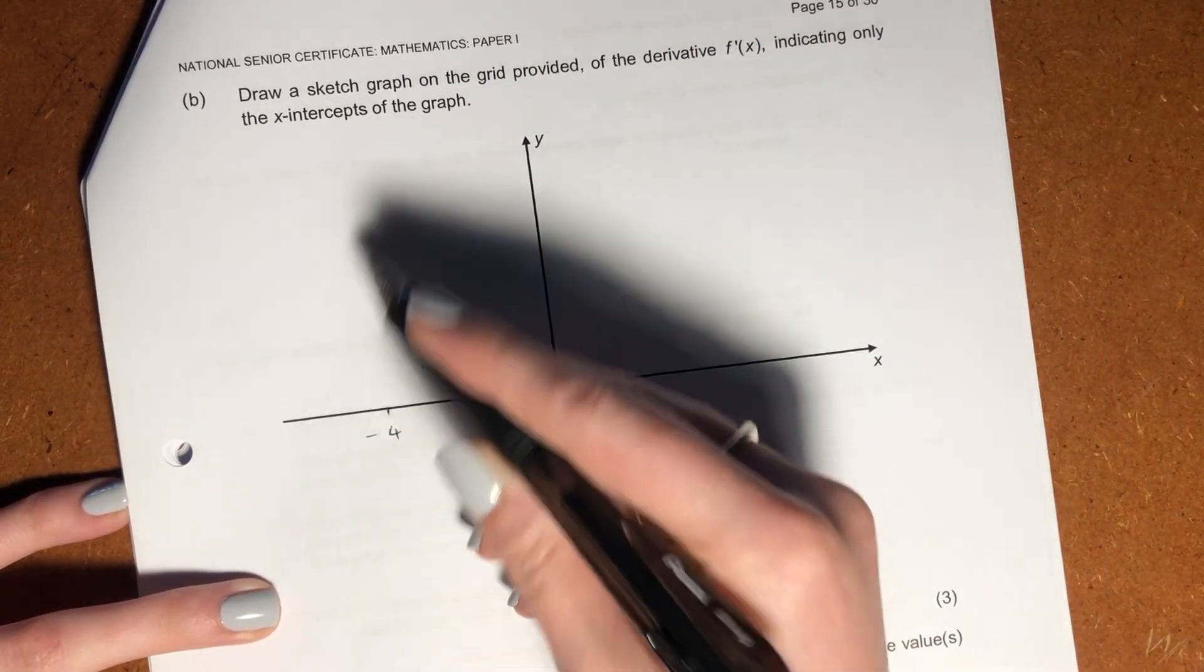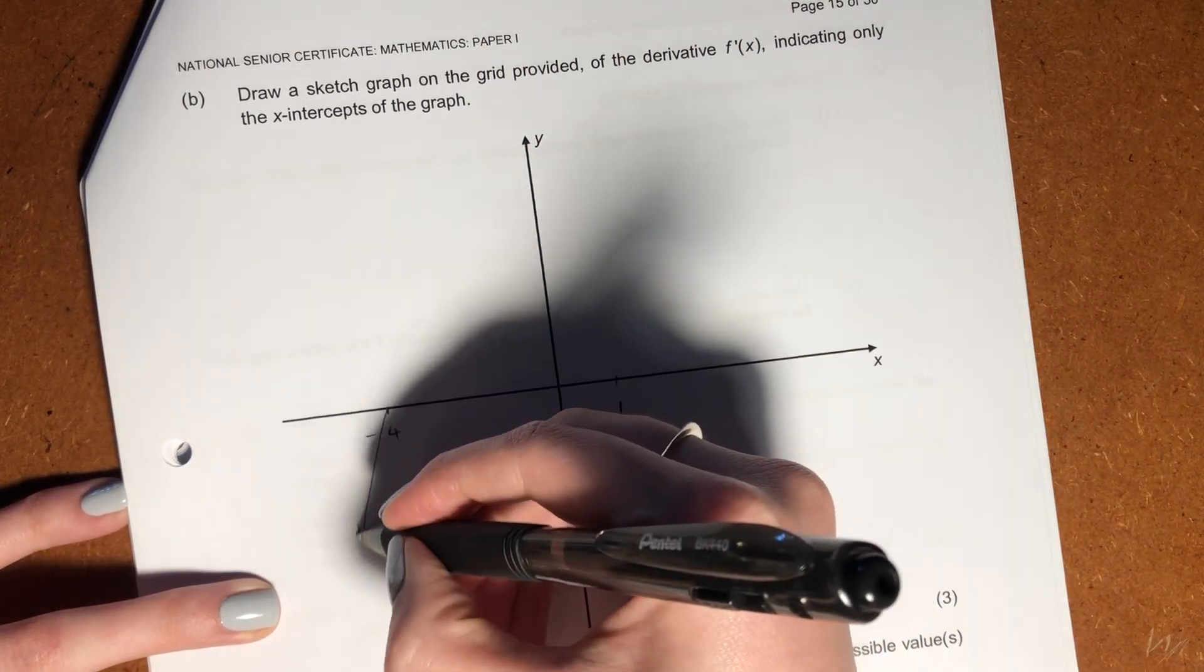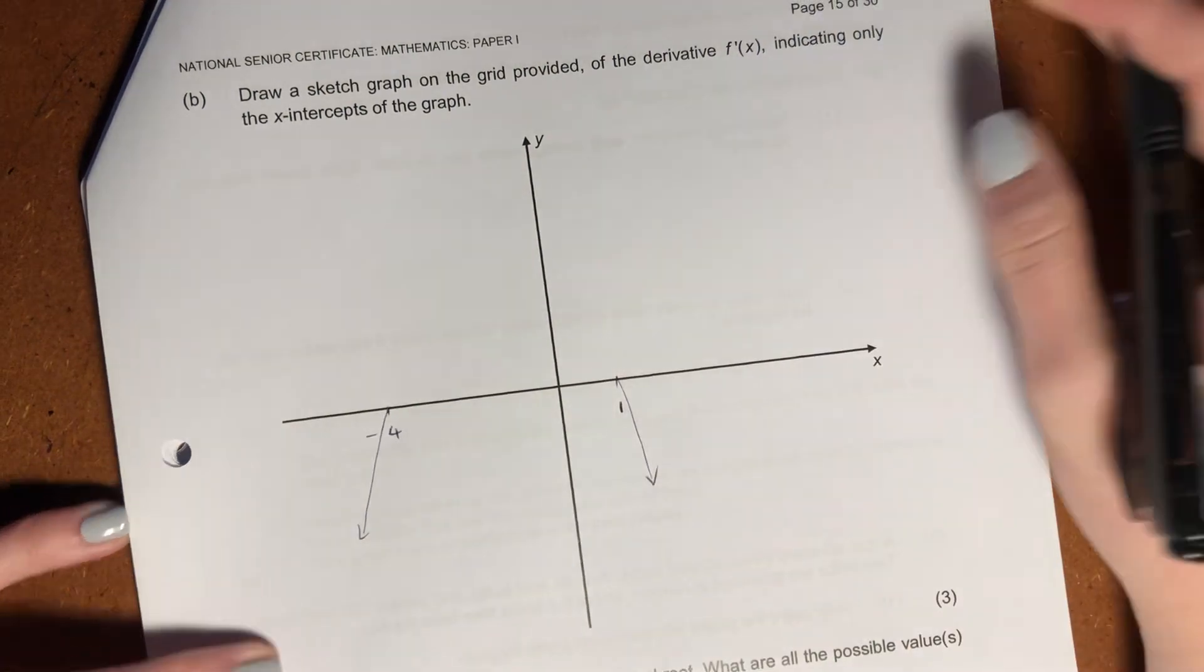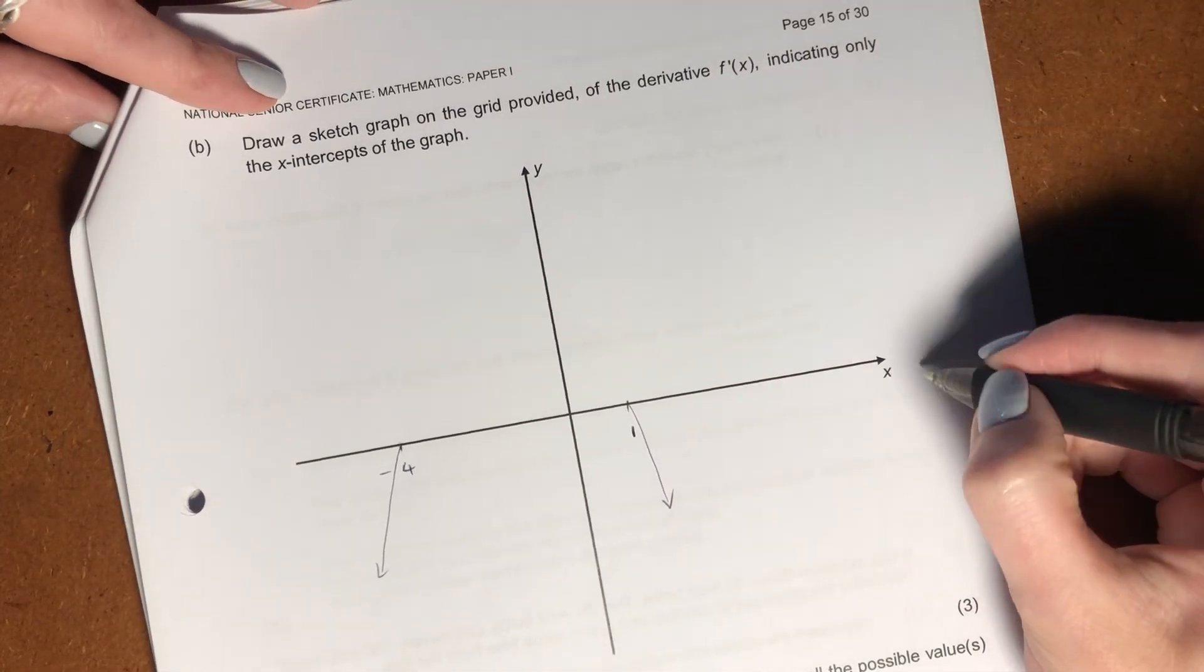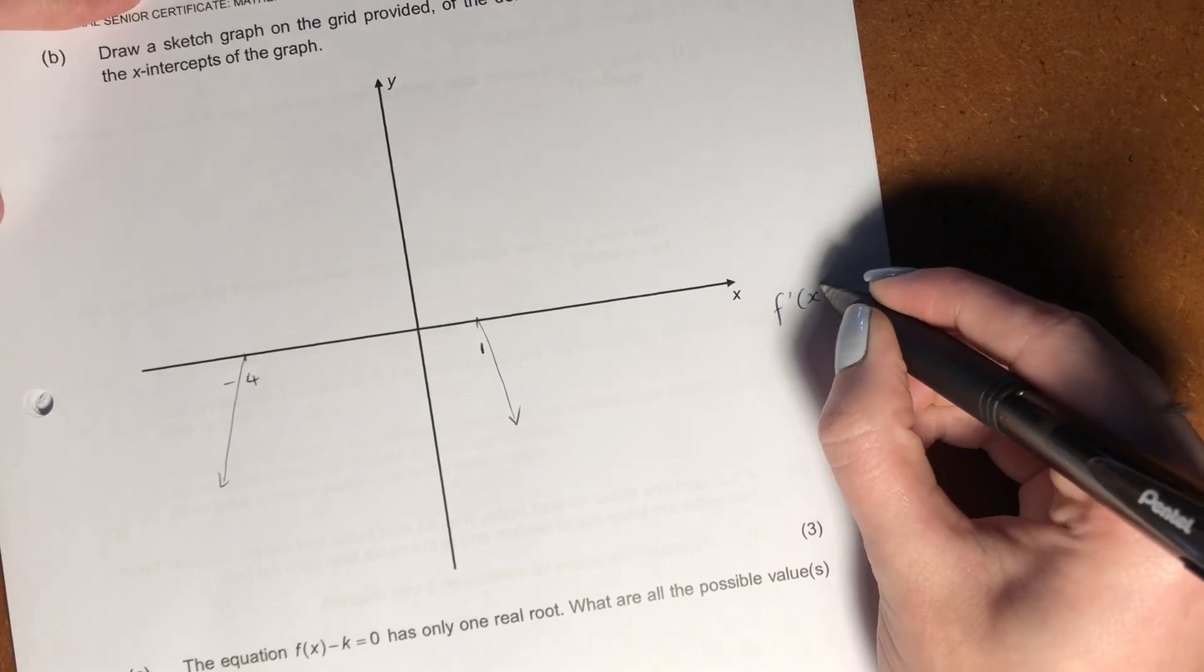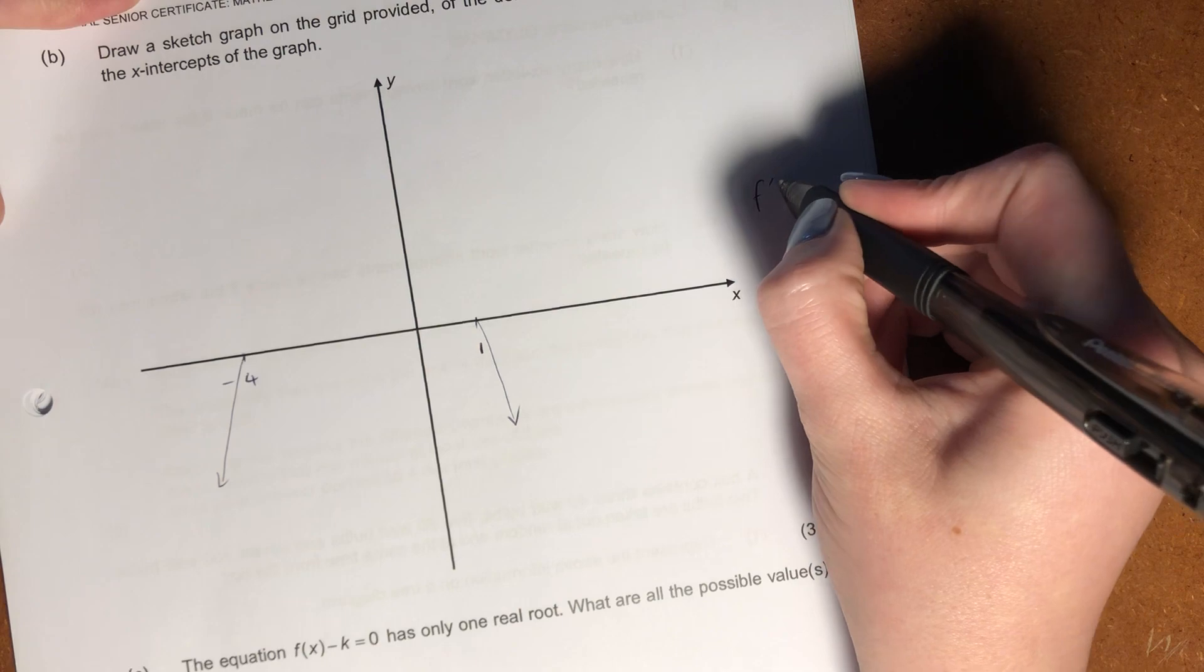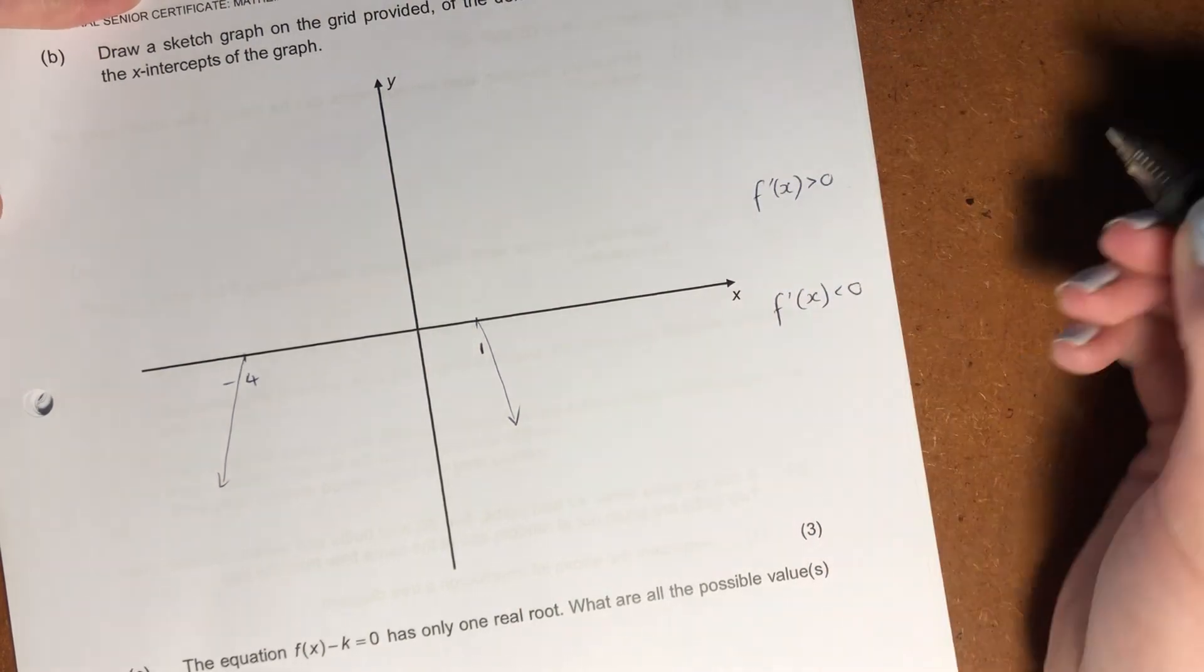Between these two values, it's positive. Below these two values, it's negative. So over here, I'm just going to draw this like this, because that's negative. We know that this here, this is basically saying, this is where f'(x), where it's less than, and this is where f'(x) is greater than.